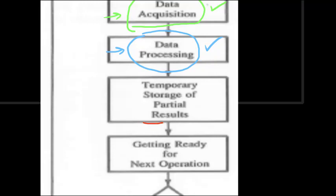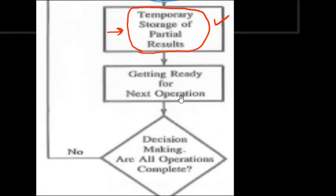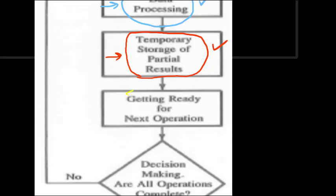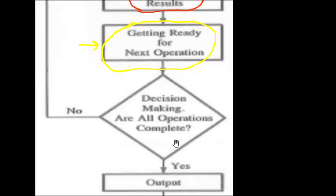The fourth block is temporary storage of partial results. If a particular operation is complex, we need to store the result temporarily before proceeding to the next step. The fifth block is getting ready for the next operation — for example, if we have processed the first memory location, we need to proceed to the second memory location, or if we have multiple tasks, we prepare for the next task.